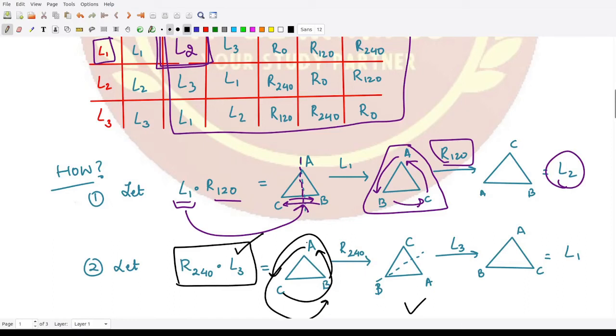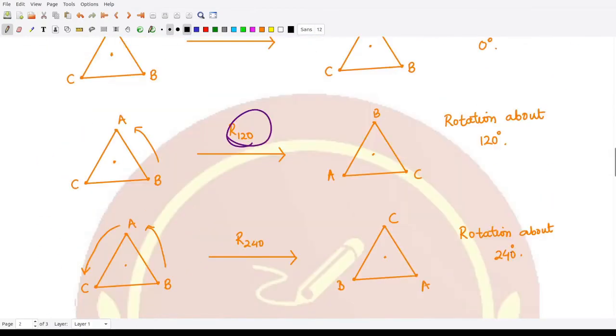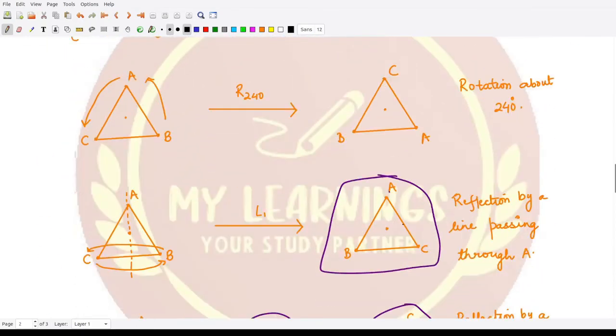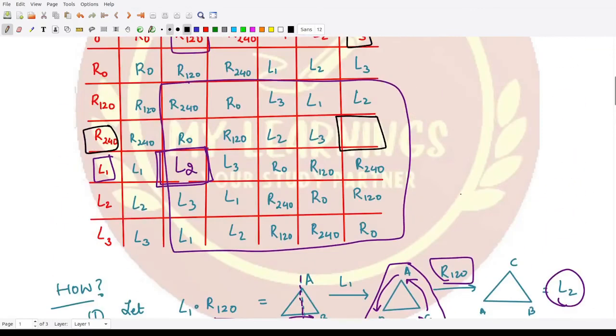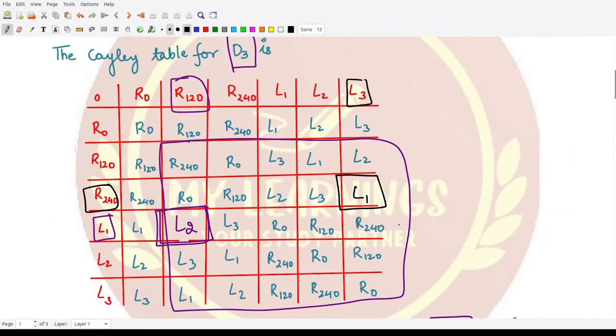L3 means we take its reflection along this line. B will be kept fixed, A would come to the position of C, and C would go to the position of A. So we would have ABC, which is L1. In a similar manner, you can see all the calculations and check your answer with this table. This is the Cayley table for D3.